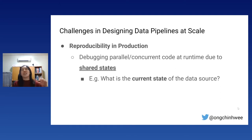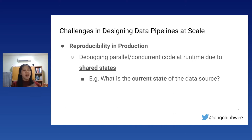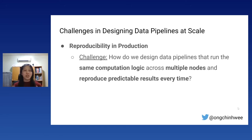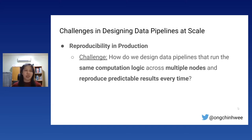We need to know the current state of the data source at a particular time. This introduces problems in debugging parallel and concurrent code around time due to shared state — in this case, the inventory. The main challenge: how do we design data pipelines that run the same computation logic across multiple nodes and reproduce predictable results every time, despite randomness introduced by time?